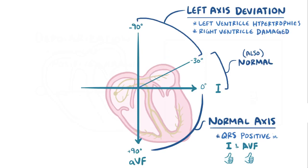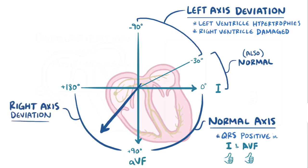If the opposite happens in the vectors negative in lead 1 and positive in AVF, then it's in this quadrant between plus 90 and plus 180 degrees, and we call that right-axis deviation. That can happen when the right ventricle hypertrophies, or when the left ventricle is damaged and loses healthy tissue.